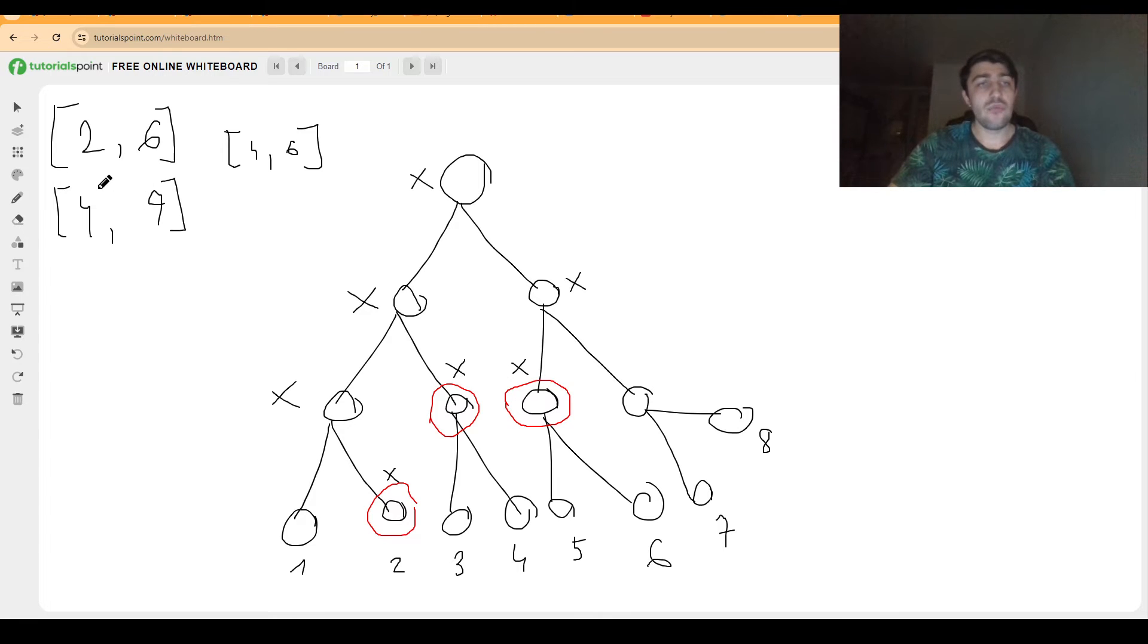Whenever we do the four to six update, we will be going through a very similar set of nodes except here we will only visit this side of the tree and subsequently we will also visit this side of the tree.